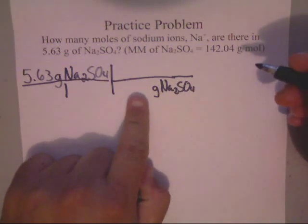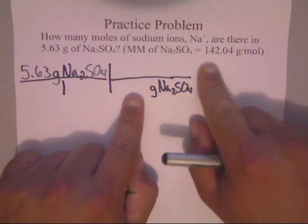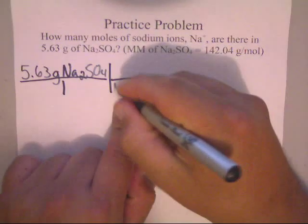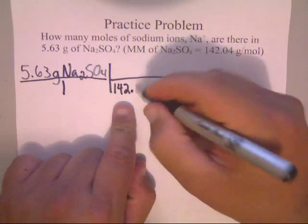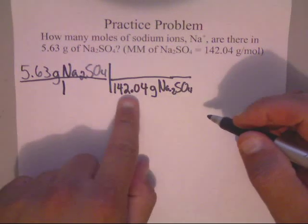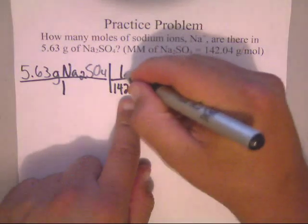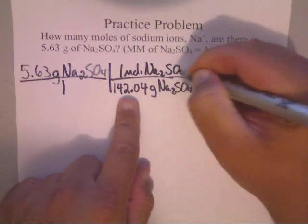Now, notice that this is blank. The reason why this is blank is we need the molar mass here. So we're going to write that number down. This is 142.04. Now, up here, since this is molar mass, I'm going to write 1 mole of Na₂SO₄.